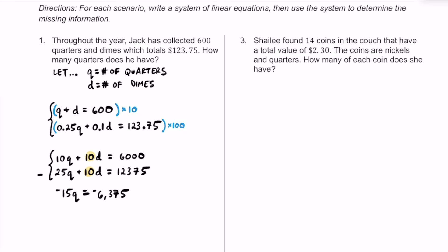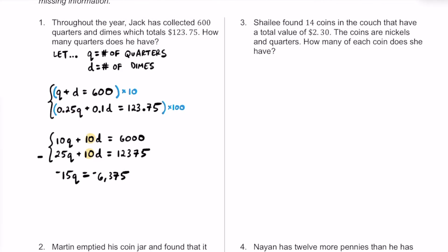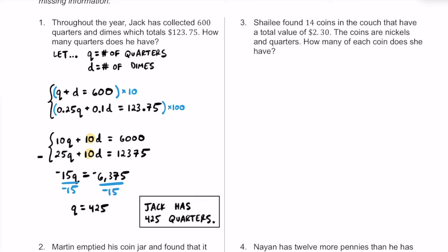It's good that this is negative because we're trying to get a positive value for the number of quarters. Dividing both sides by negative 15, we find Q equals 425. So out of all 600 coins that Jack has, 425 of them are quarters.